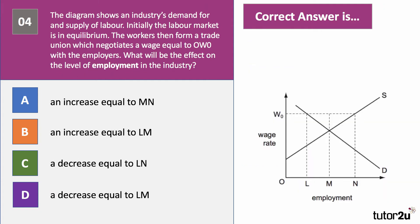Question number four. The diagram shows an industry's demand for and supply of labour. Initially, the labour market is in equilibrium. The workers then form a trade union, which negotiates a wage equal to W0. What is the effect on the level of employment in the industry? Have a go at question four.